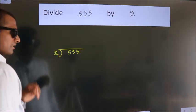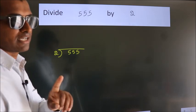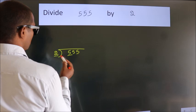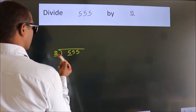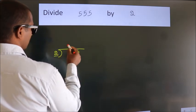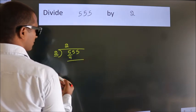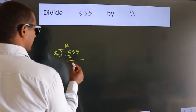This is your step 1. Next, here we have 5, here 2. A number close to 5 in 2 table is 2 twos, 4. Now we should subtract. We get 1.